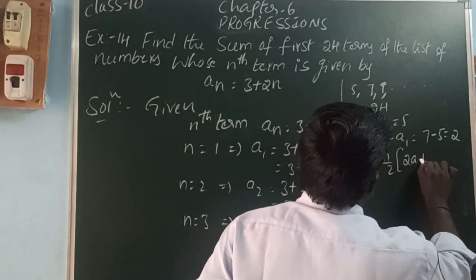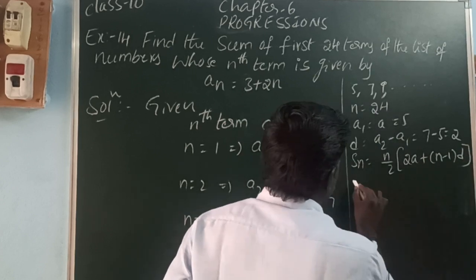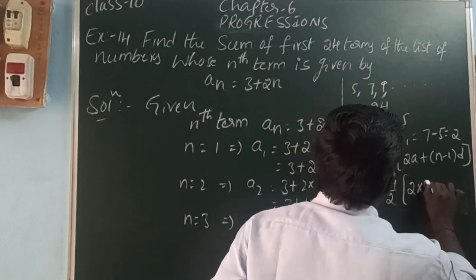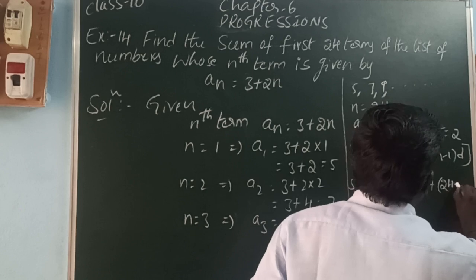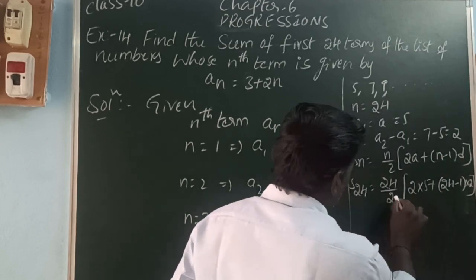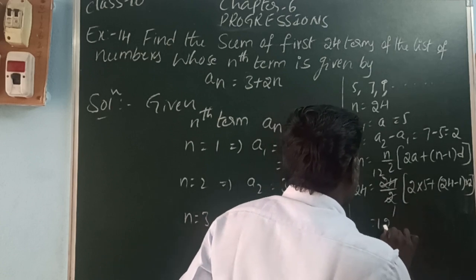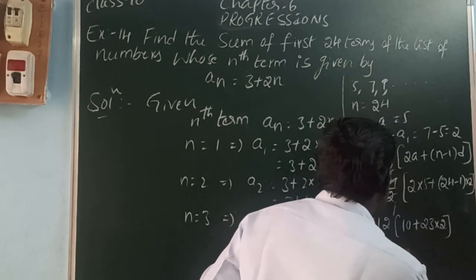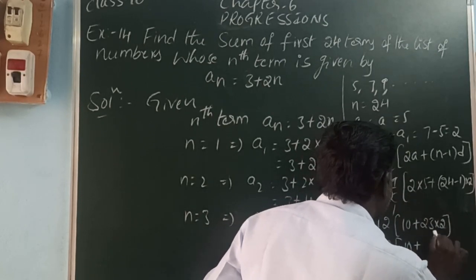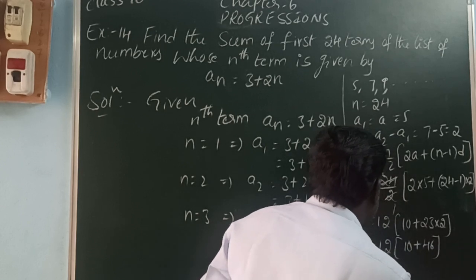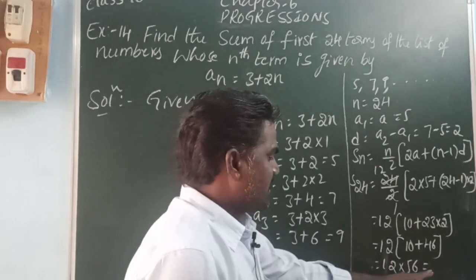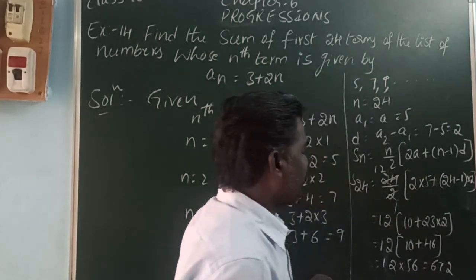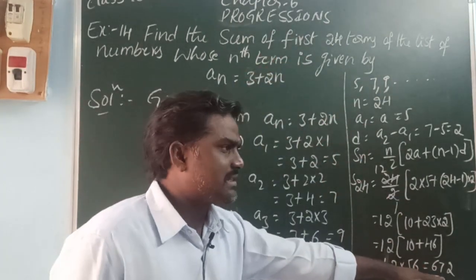S24 = 24/2 × (2×5 + (24-1)×2) = 12 × (10 + 23×2) = 12 × (10 + 46) = 12 × 56 = 672. So the sum of the first 24 terms of the given nth term is 672.